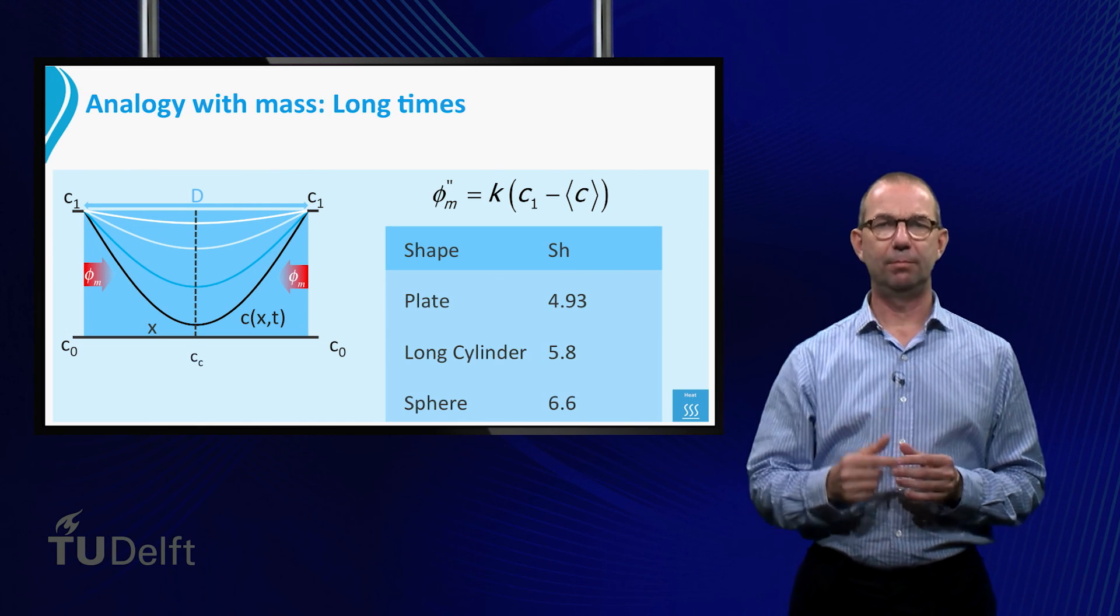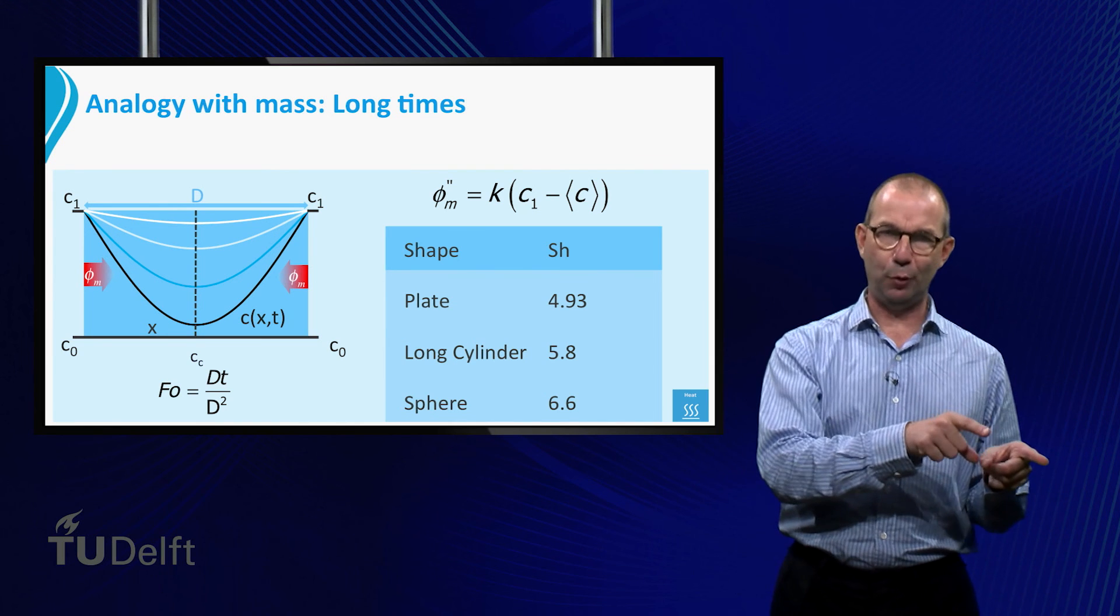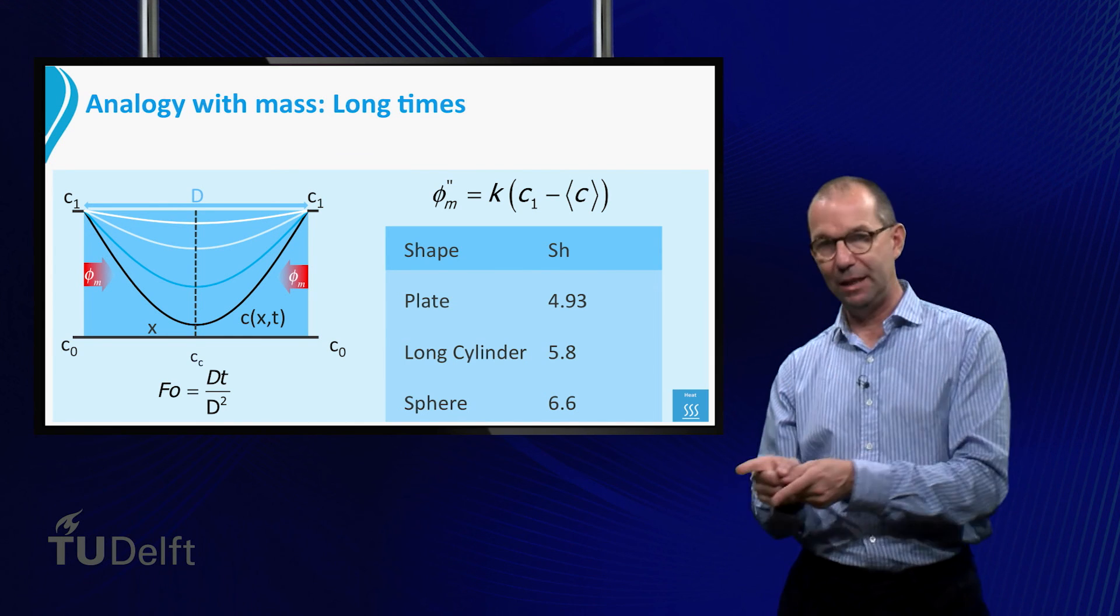Note like before, that we have to be careful with the letter capital D, italic for diffusion coefficient, plain for size.